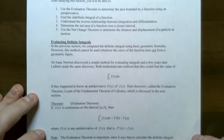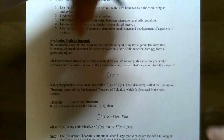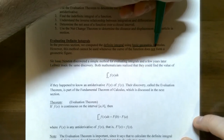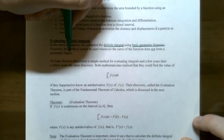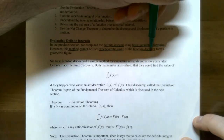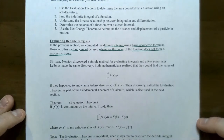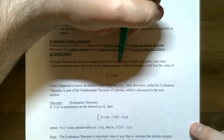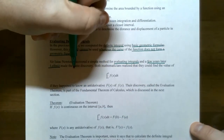Let's start with evaluating definite integrals. We've actually evaluated definite integrals in previous videos when the definite integral gave us an area that we could use a simple geometric formula to find the area bounded by the curve. However, that method cannot be used whenever the curve of the function does not form a geometric figure such as a rectangle, triangle, trapezoid, or even a semicircle. So Sir Isaac Newton discovered a simple method for evaluating integrals a few years after Leibniz made the discovery. Originally Leibniz made the discovery, but then Newton actually published the work.